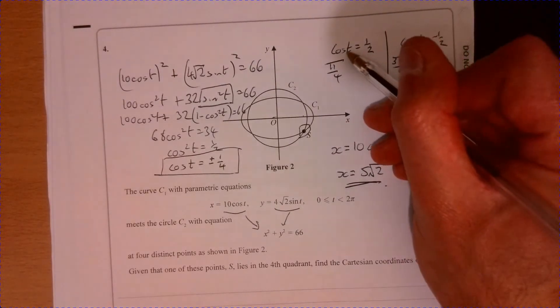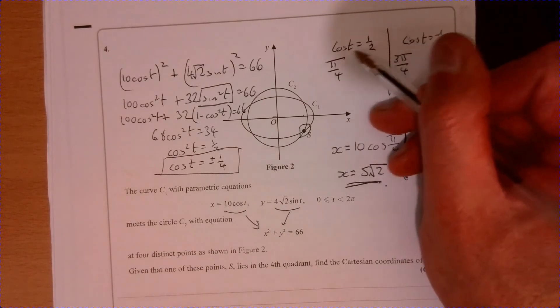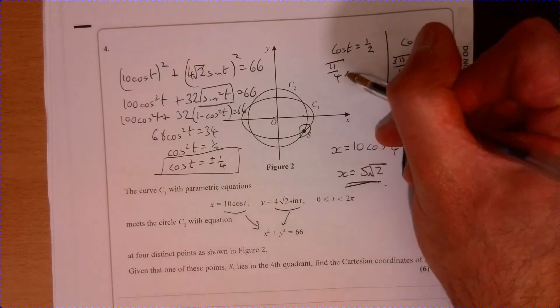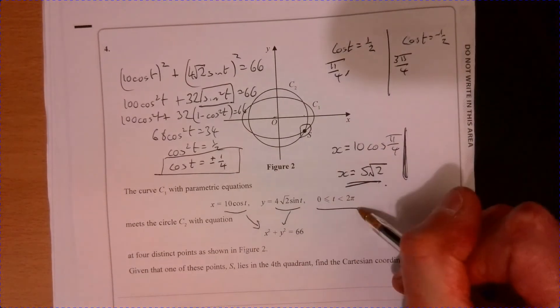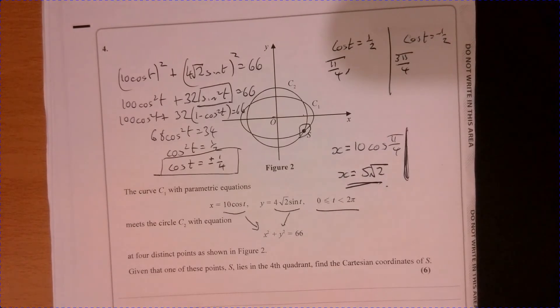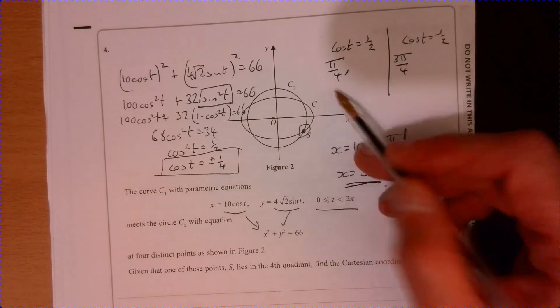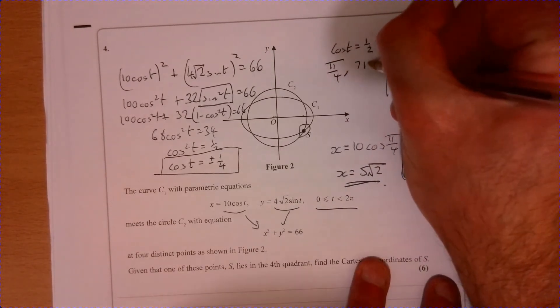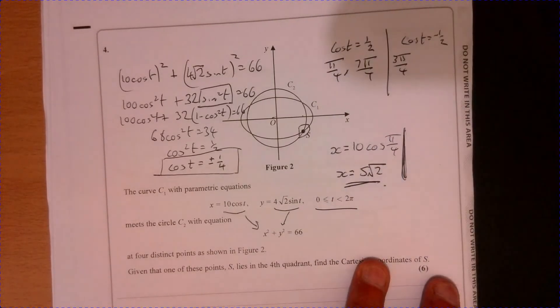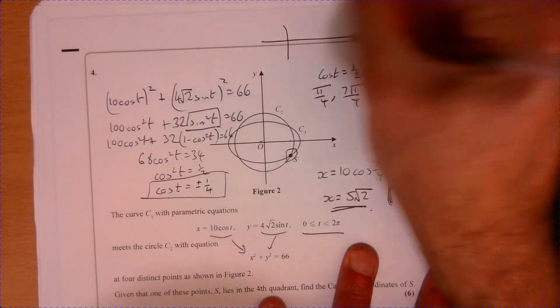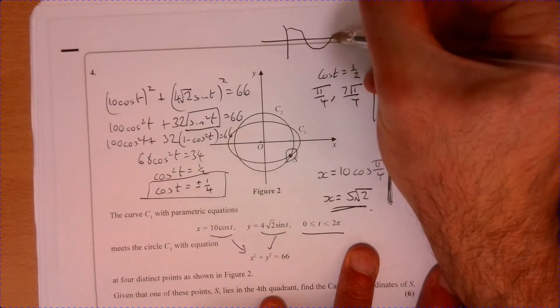But what we're missing up here is the different values that T could be because we're told here that T can take anything from zero to two pi. So I got pi over four, but also it could be seven pi over four. If you just think about what cos looks like, something like that.